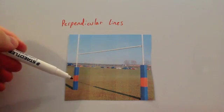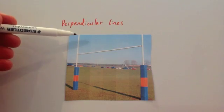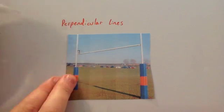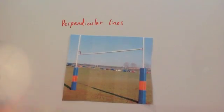Here we've got a set of rugby posts. As you can see, the vertical posts and the horizontal posts, these would be at 90 degrees to each other. That means they are perpendicular to each other.